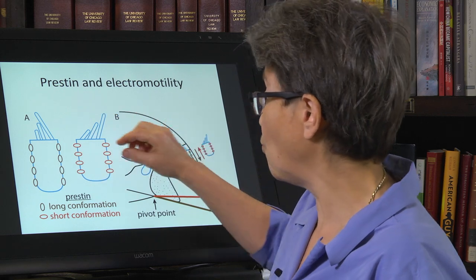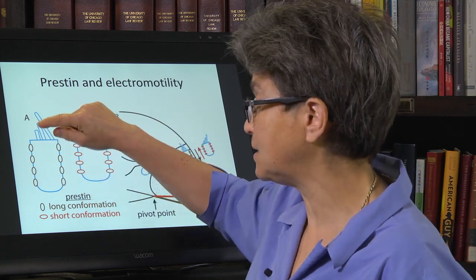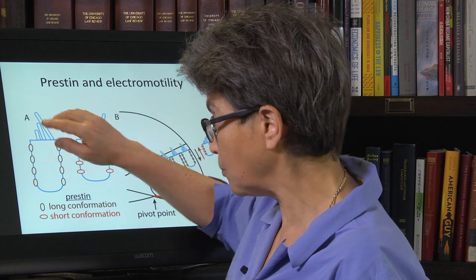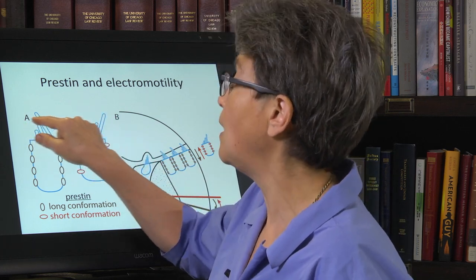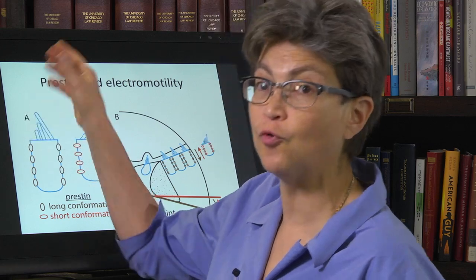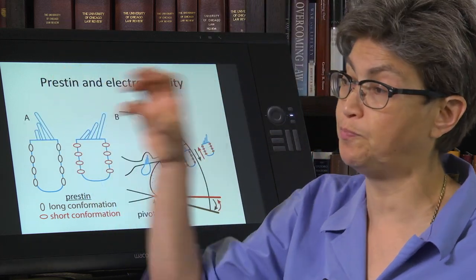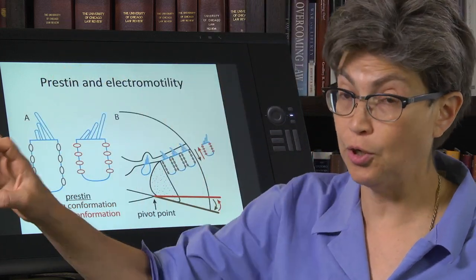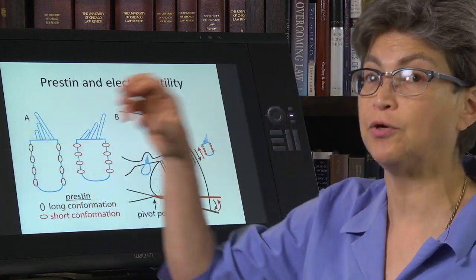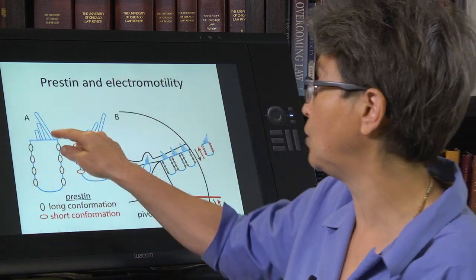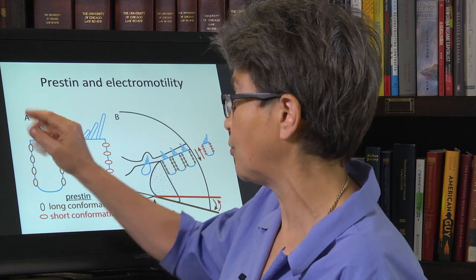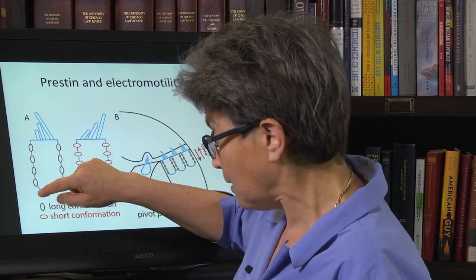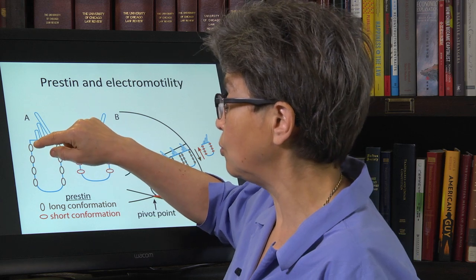So as sound comes in here, there are waves of pressure and these bundles are going to go back and forth as the pressure is being put, as there's compression and rarefaction at the oval window. These bundles will go back and forth and these prestin molecules will lengthen and shorten.